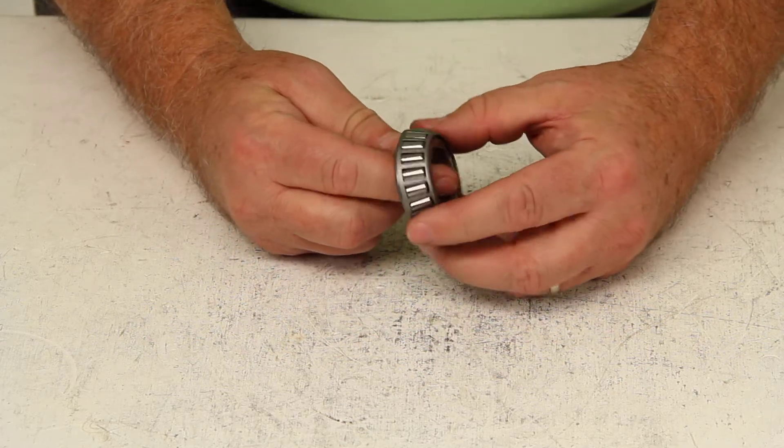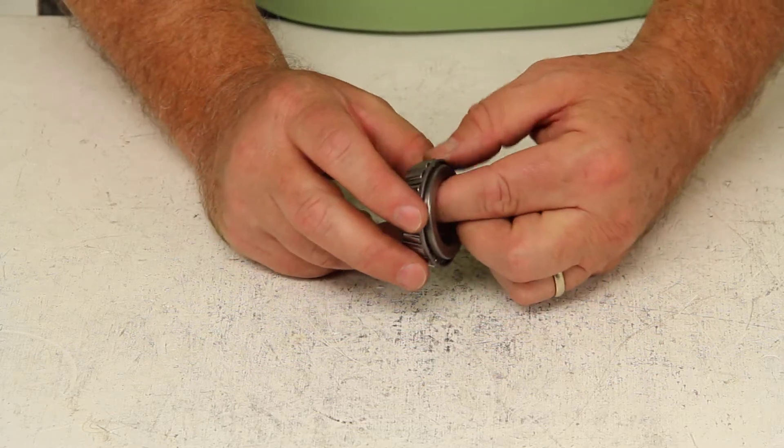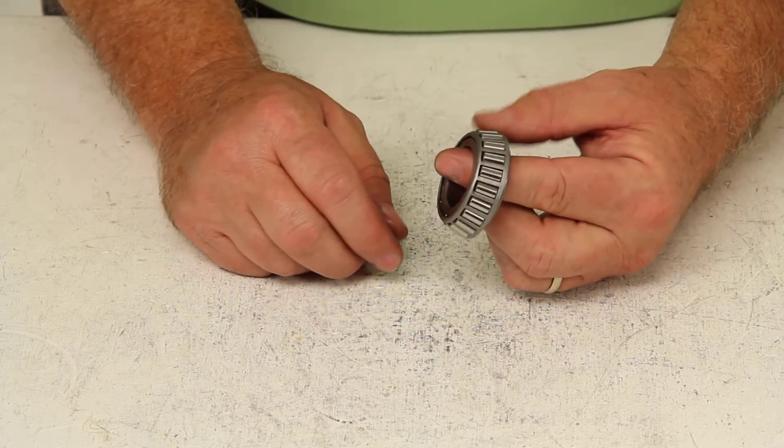Now these bearings are lubricated by wheel bearing grease or in some cases oil. The wheel bearing will consist of three components.